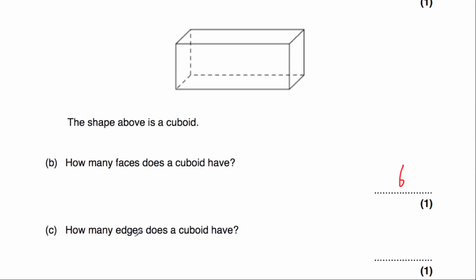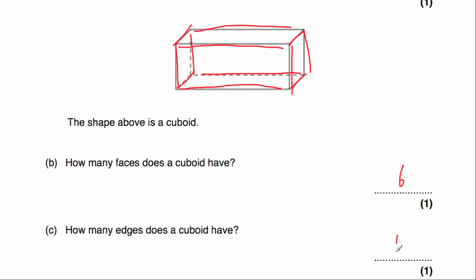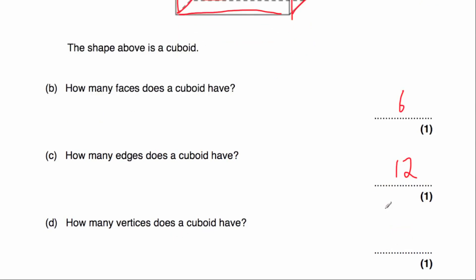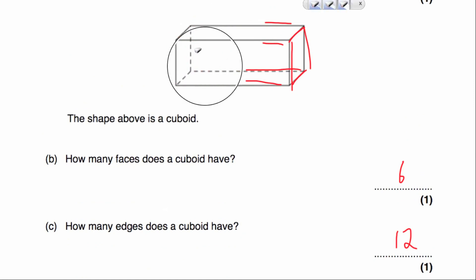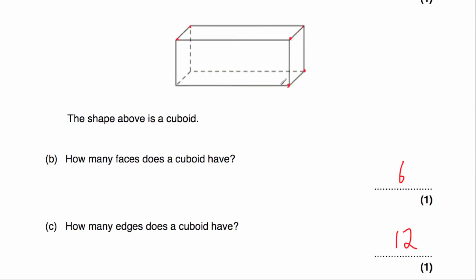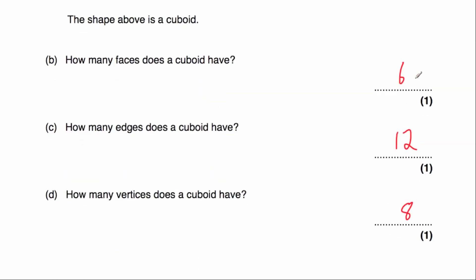Part B: how many edges does a cuboid have? Counting the edges: 1, 2, 3, 4, 5, 6, 7, 8, 9, 10, 11, 12 — so a cuboid has 12 edges. And finally, how many vertices does a cuboid have? The vertices are the corners. Counting: 1, 2, 3, 4, 5, 6, 7, 8 — so a cuboid has 8 vertices. In summary: 6 faces, 12 edges, and 8 vertices.